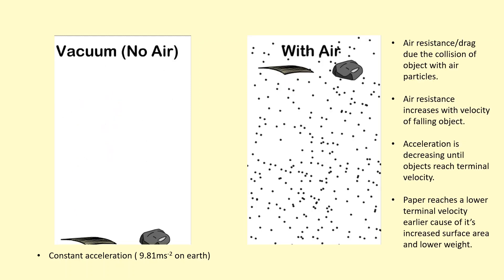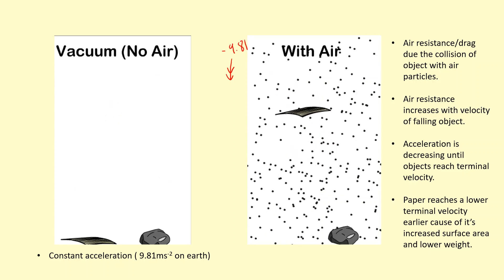What happens if the object is falling through air? So initially, the acceleration of both objects will still be minus 9.81. But as it starts to fall through the air, there's going to be collisions between the air particles and the object, and this is going to exert a drag force in the opposite direction to the direction in which they're moving.